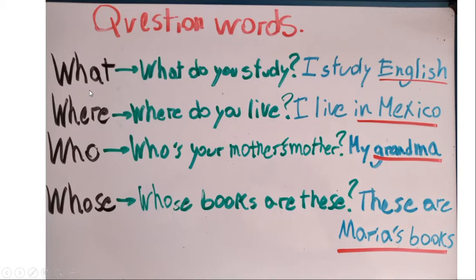'What' is used to talk about objects or things. For example, the question: 'What do you study?' — I study English. English is your object, that's why we use 'what' because it refers to an object.